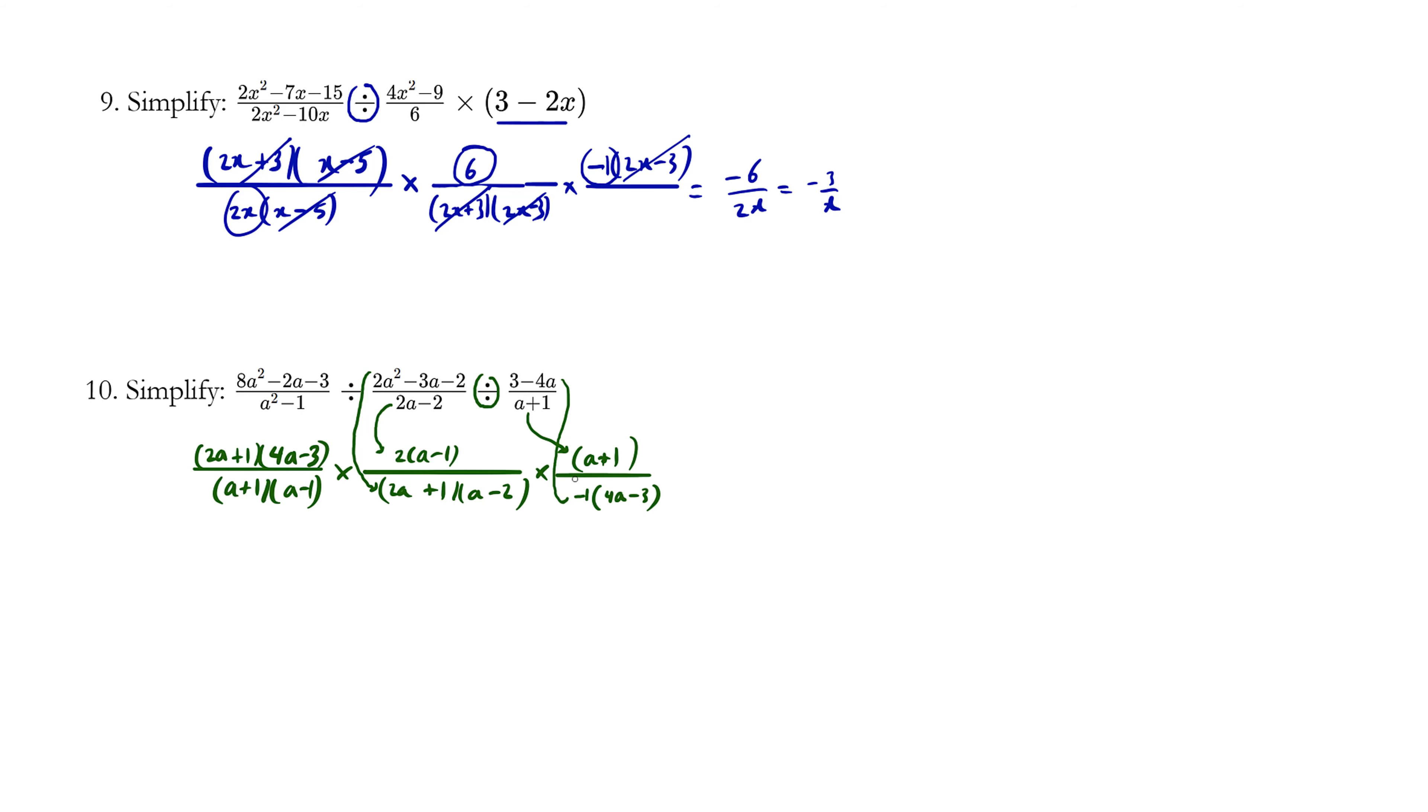What can we cancel now? Notice how the numerator is a plus one. We see a plus one here. What about the four a minus three? We see one all the way across over here. How about a two a plus one? We see one here. A minus one. We can cancel it over here.